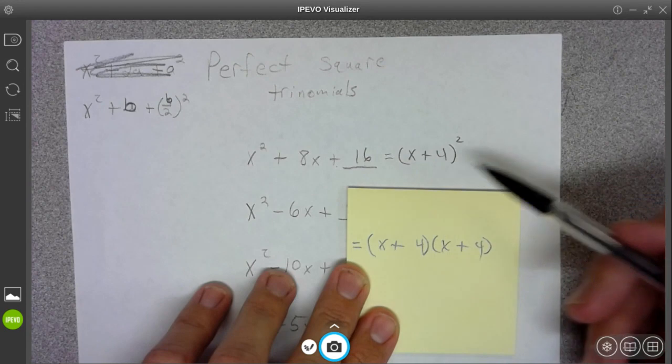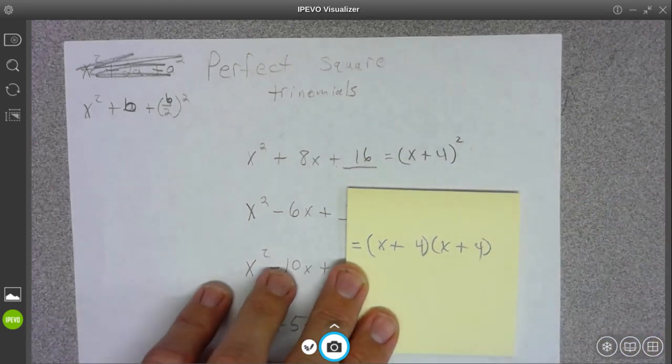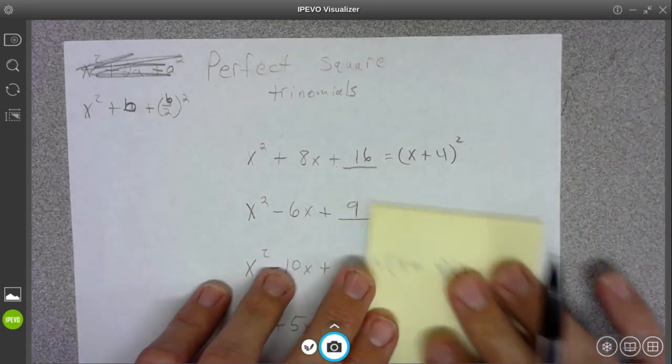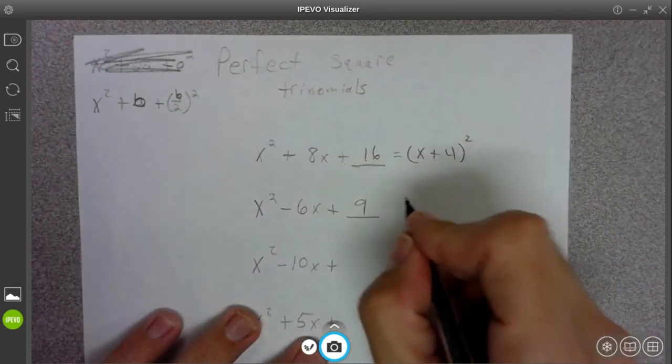And because you have a double factor, you can write it as a binomial to the second power squared, and that's what's nice about these. You're doing something almost illegal to get a perfect square trinomial, and in the next video I'm going to go over how to get around that and why it's actually legal.